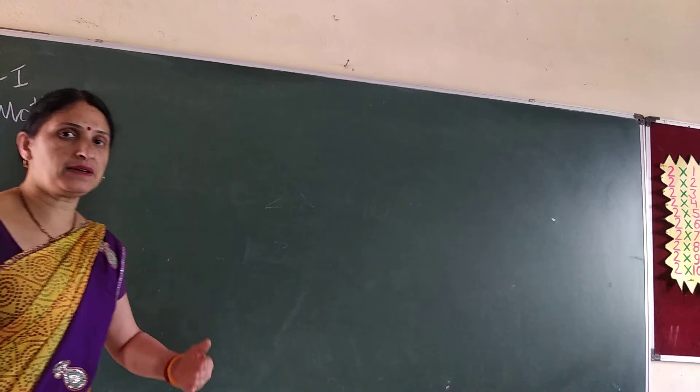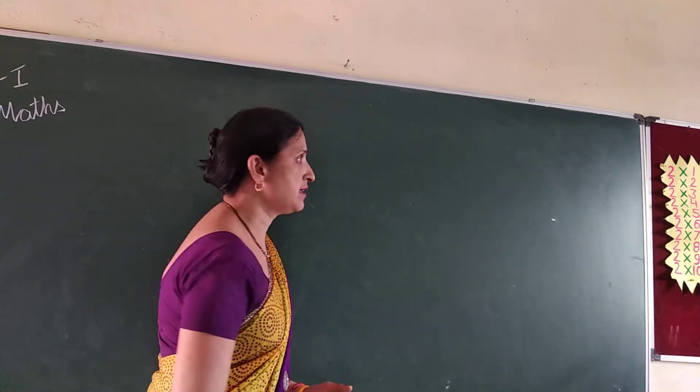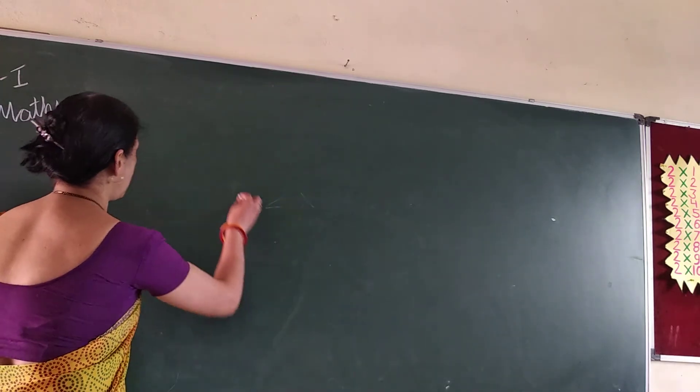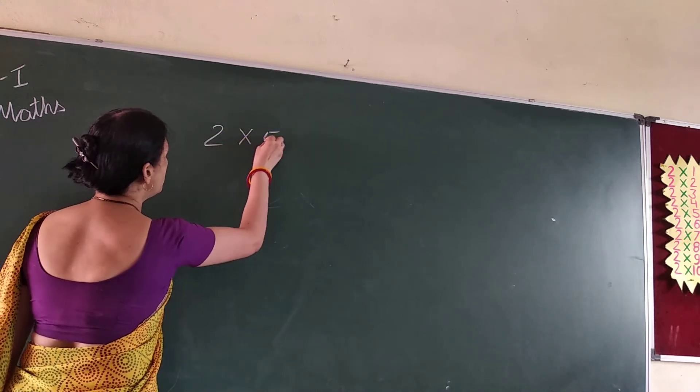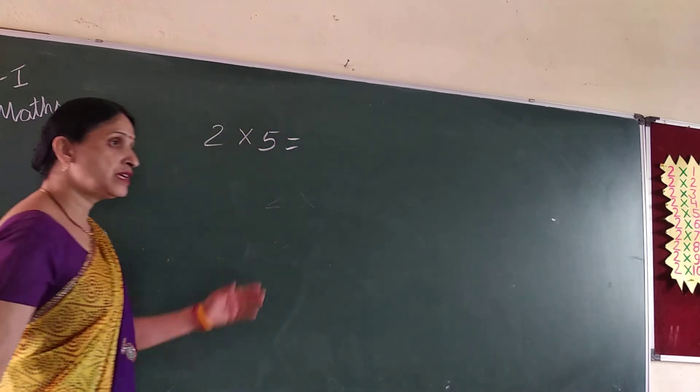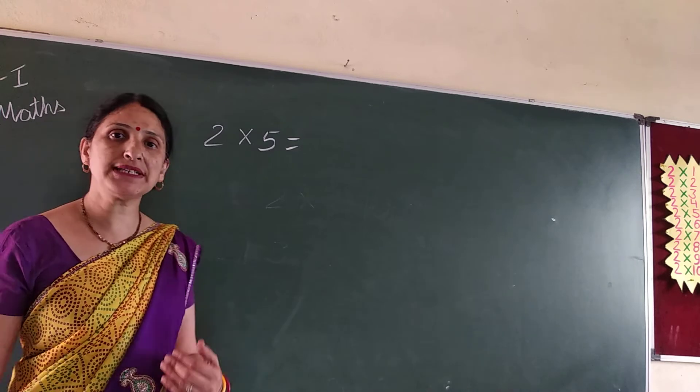Now, 1 times 5. 2 5's are. What I am asking you? 2 5's are. If you have to memorize it here, how do you recite it?